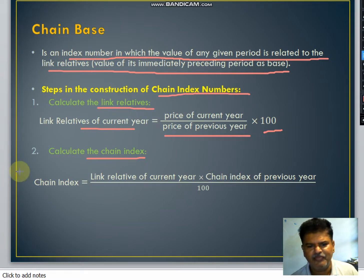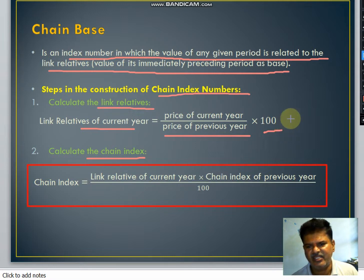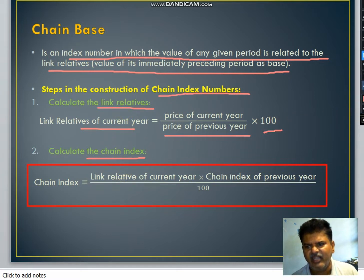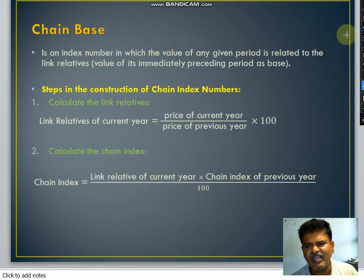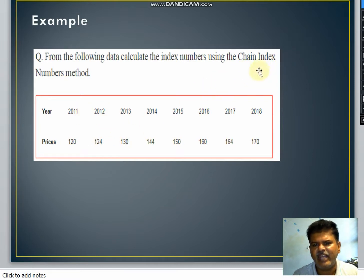So use this chain index formula. In chain base, we need these two steps: first calculate the link relative, then calculate the chain index. Take this example — from the following data, calculate the index number using the chain index method. We are given years from 2011 to 2018 and their corresponding prices, starting at 120 up to 170.